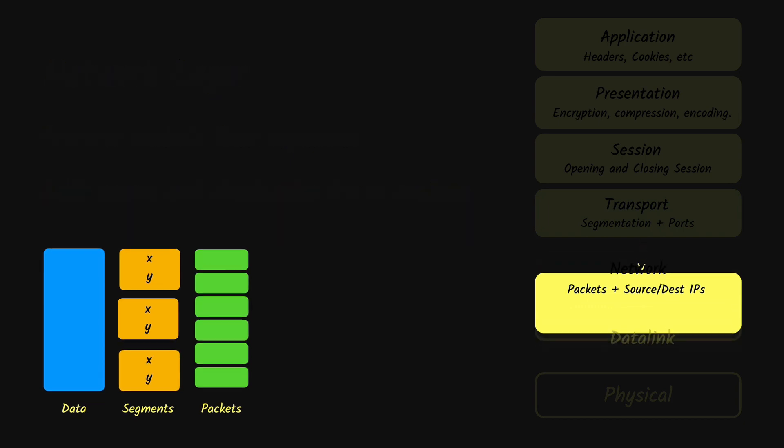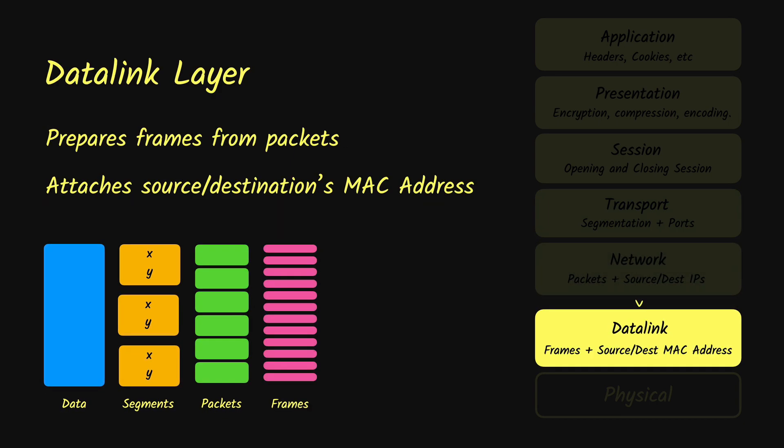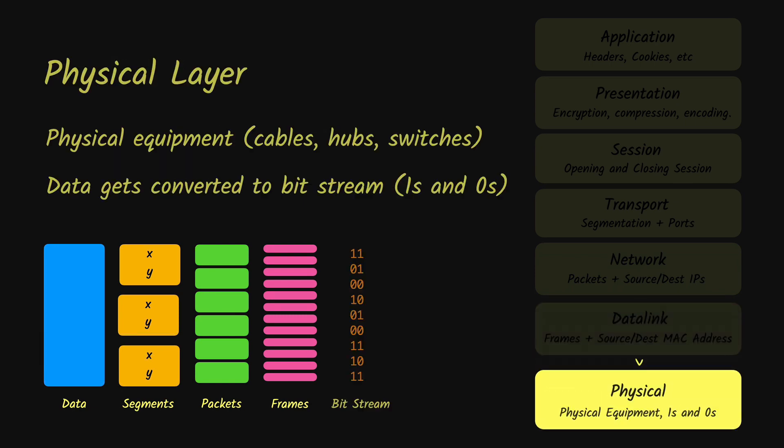Next we have the data link layer, which is further responsible for breaking the packets into frames and assigning the destination and source MAC addresses to each frame. Next, and the final layer of the OSI model, is the physical layer, which involves all the hardware such as routers, cables, hubs, and switches. This is the place where the frames get turned into a bit stream of ones and zeros, which is then sent to the receiver.